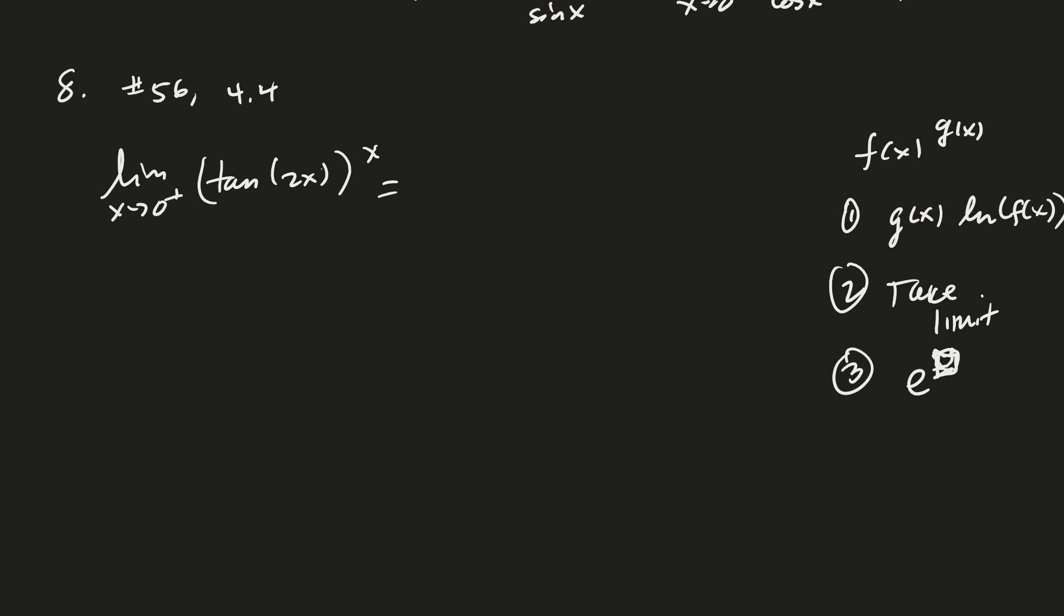Okay. And so in this case, we could write, oops, I don't want to put an equal sign there because this won't be equal to what we're going to be doing. We're going to be taking, instead of taking the limit of the original function, we're going to be taking the limit of the logarithm. And then at the very end, we'll exponentiate to get back. So when I take the log of this, it's going to be x times the natural log of the tangent of 2x. Okay. And now when I look at my limit, it looks like I've got a 0. Tangent of 0 is 0. And then natural log, as your input to the log goes to 0, the natural log goes to minus infinity. And so we're going to need to do something about this. And so kind of the natural thing to do would be to put x in the denominator, right? So that would be natural log of the tangent of 2x divided by 1 over x.